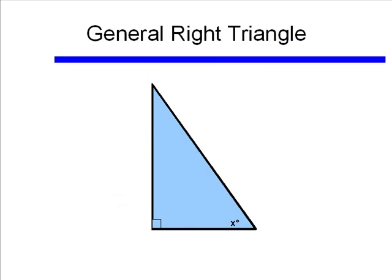Let's talk about a general right triangle. We can tell it's a right triangle because in one of the angles there is a box. That means it's a 90 degree angle, so it's a right triangle. And we're going to look at one particular acute angle, and that will be what we've labeled x — in degrees, so we've left a little degree symbol there.